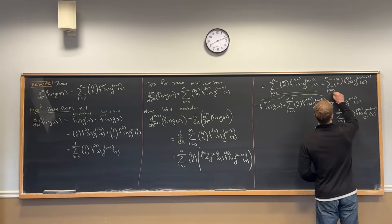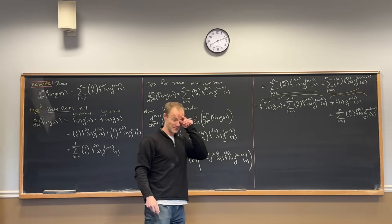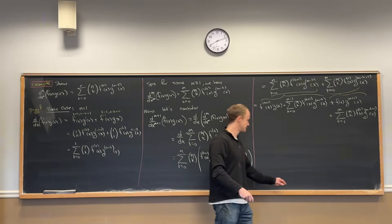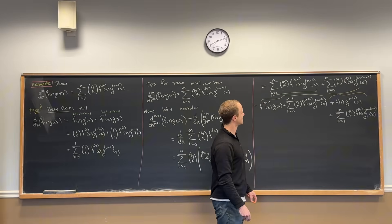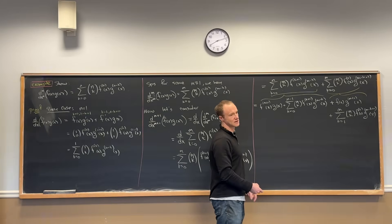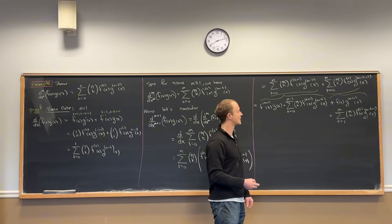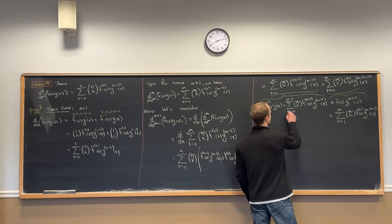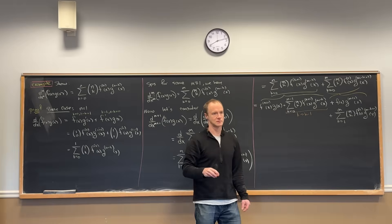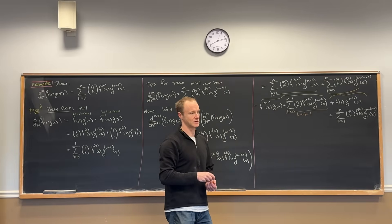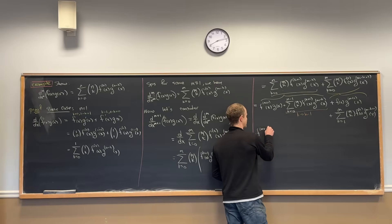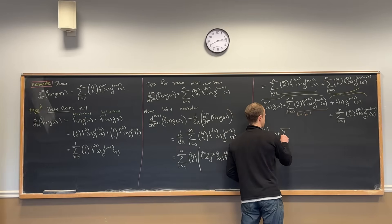Now we're going to re-index one of these two sums. What I want to do is change them so the derivatives look the same and I can add them together. I can do that by replacing every k in the first sum with k minus 1. So I'm taking every k and replacing it with k minus 1. Let's bring down the isolated terms first: the (m+1)st derivative of f and zeroth derivative of g, plus the (m+1)st derivative.